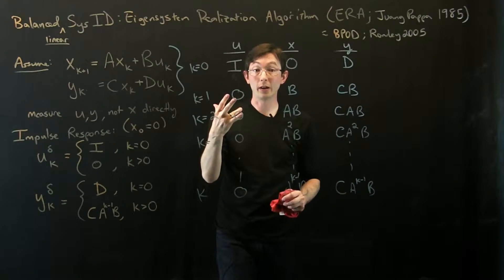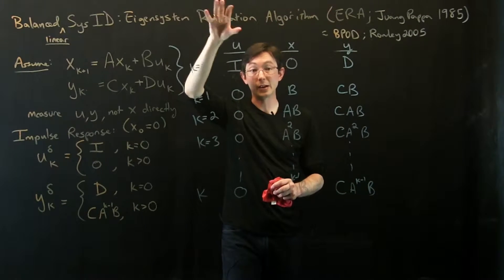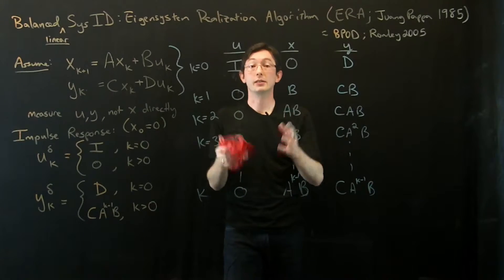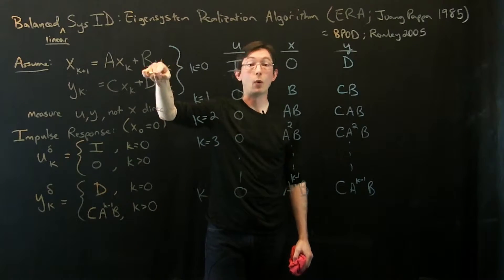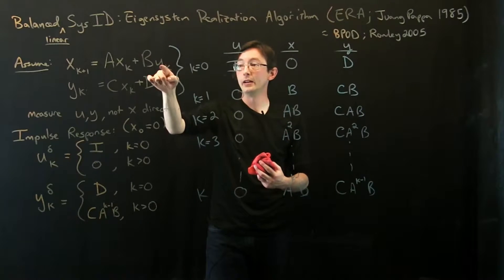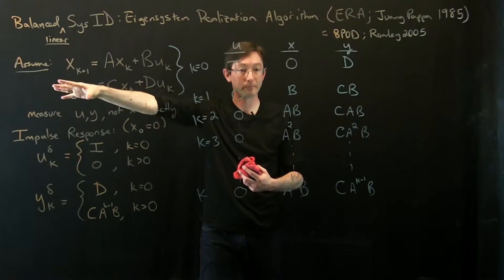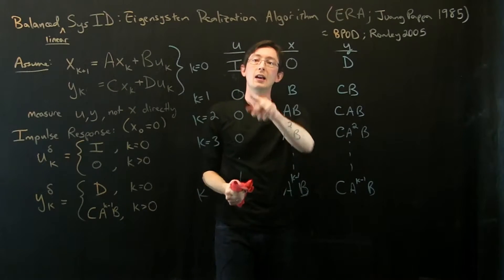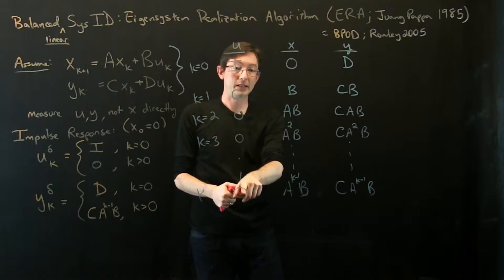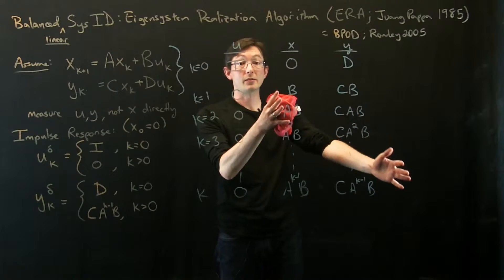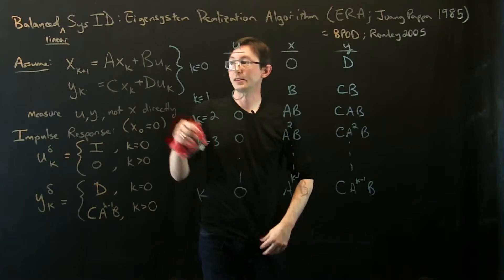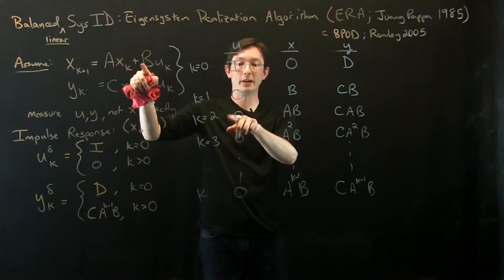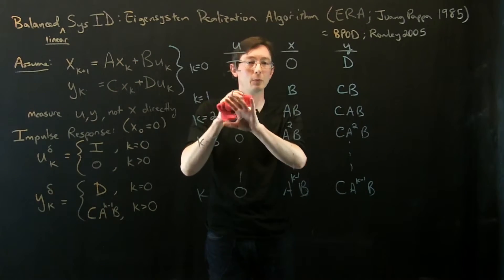So this is going to get a little hairier. What we're going to do, the eigensystem realization assumes you can do an impulse response, but that's hard to do in a lot of systems. So instead, I might feed this like a white noise input or some kind of pseudo-random input and try to back out what the impulse response would have been or back out these matrices. And if this u didn't drop off to 0, all of these expressions would get a lot more nasty.